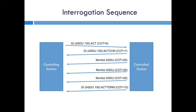Let's take a look at a typical interrogation sequence. Here we can see the controlling station sending a GI — ASDU 100 — with an ACT, or a COT, or cause of transmission of six. The control station responds with an ACT-CON which is a cause of transmission of seven. It then sends the monitor data — multiple monitored ASDUs in response to the GI, each of which has a COT or cause of transmission of 20. Then it wraps up the general interrogation sequence by sending an ACT-TERM, or a COT of 10.